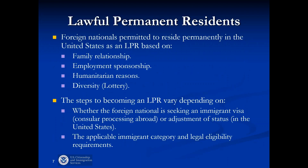Lawful permanent residence: we use the term immigrants or lawful permanent residents for nationals who are allowed to live permanently in the United States — also called LPRs or green card holders. There are four main avenues for foreign nationals to seek LPR status: close family relationship, through a job, a humanitarian basis such as refugees, and the green card lottery. The LPR process varies based on the qualifying category and whether the person is applying outside or inside the United States.